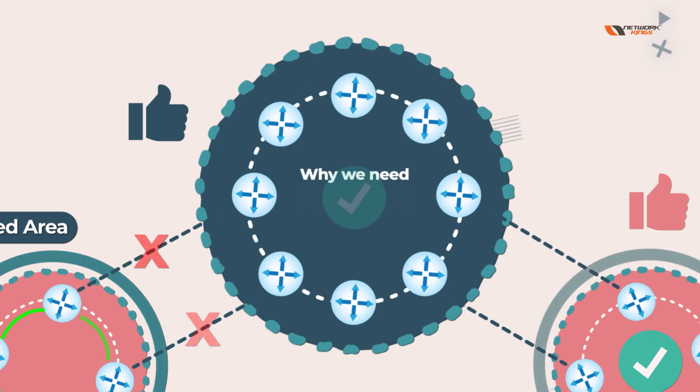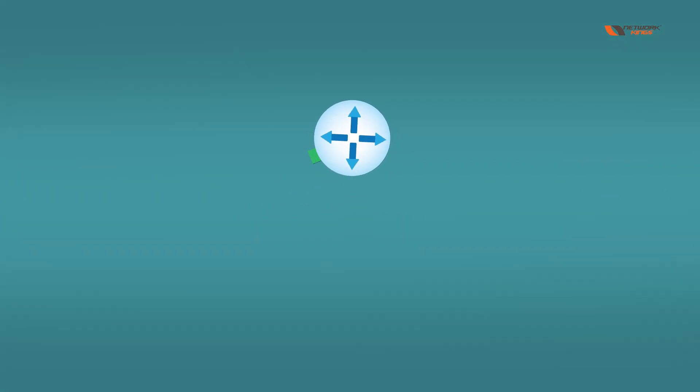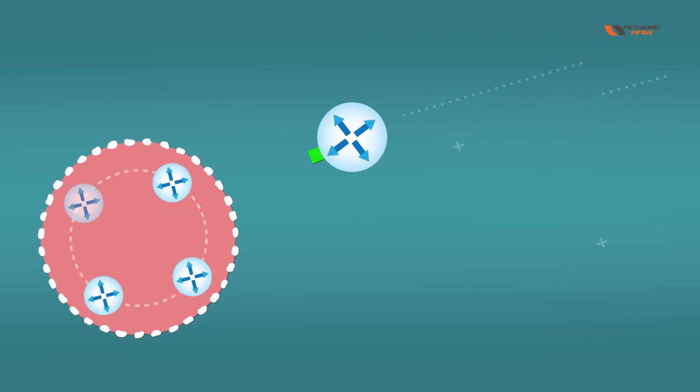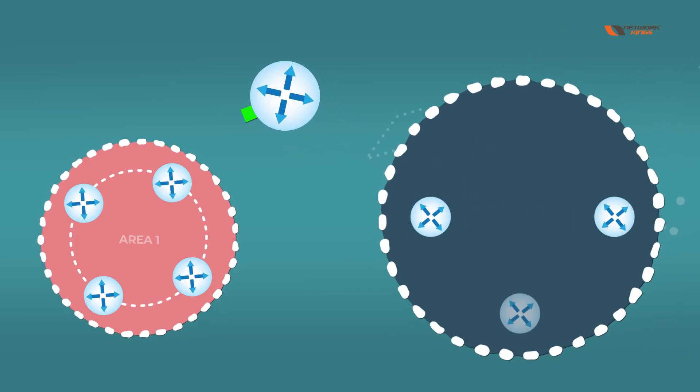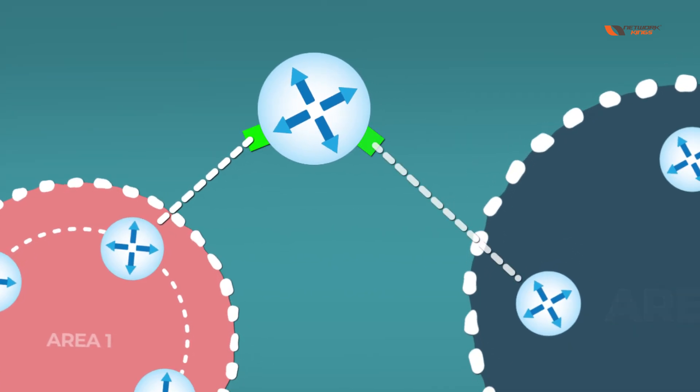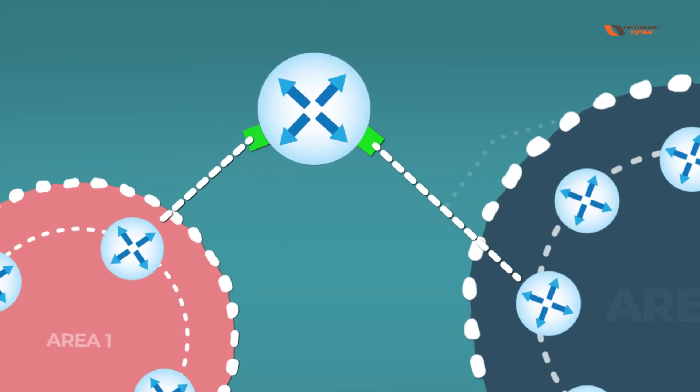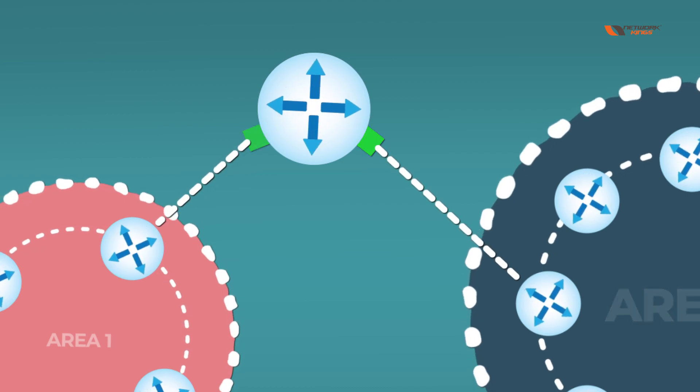Why do we need Area 0? Suppose this router has an interface in Area 1 with many routers, and another interface going into Area 0. Whenever you have any router with multiple areas, we call this router an Area Border Router in OSPF.